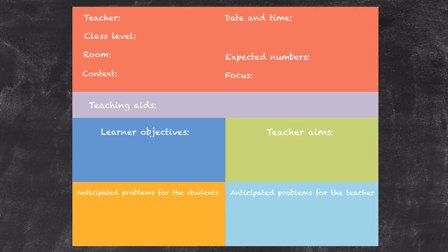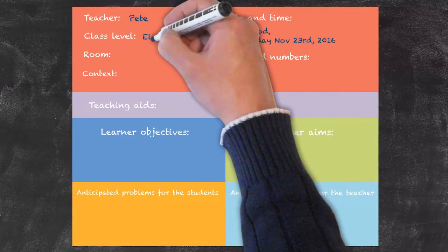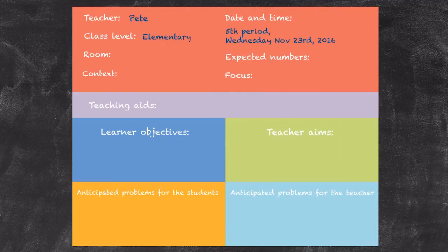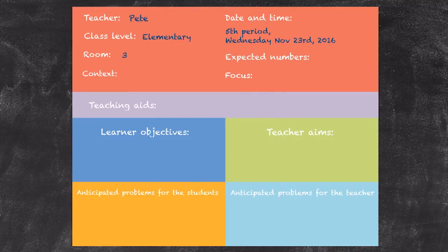We're going to use this pro forma as our lesson plan and fill one out as though we were planning for an actual lesson. We start off with some basic information about the class: the name of the teacher, date, time, and the class level. In this particular case our class is going to be an elementary class, in room 3. Having looked through the registers, the expected number of students is 10, which will help us in creating our worksheet copies.